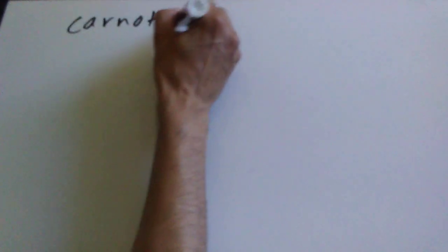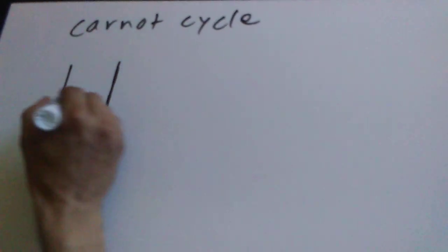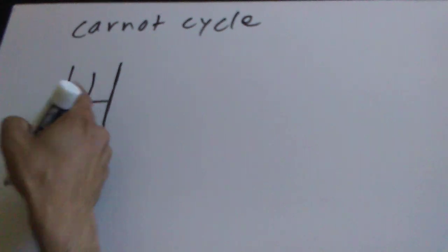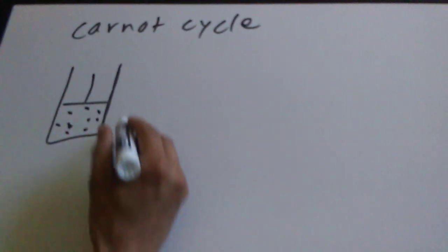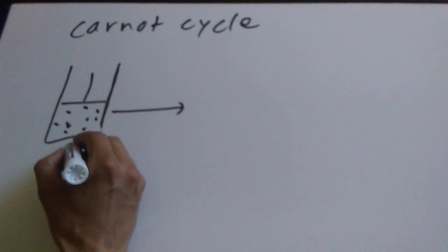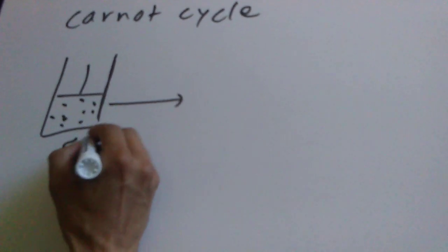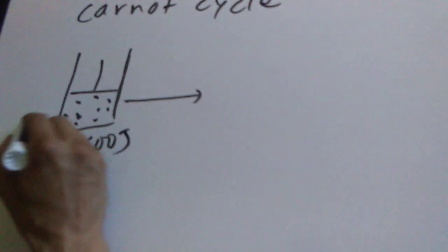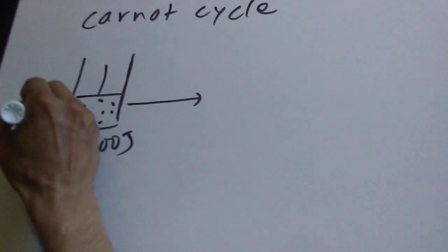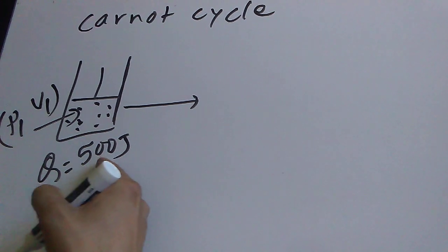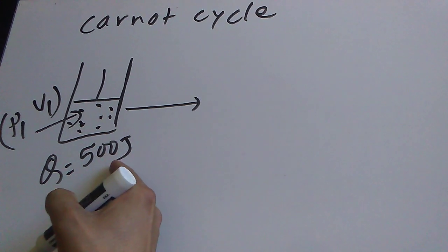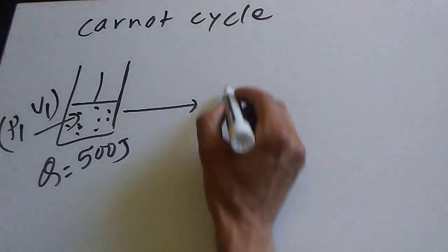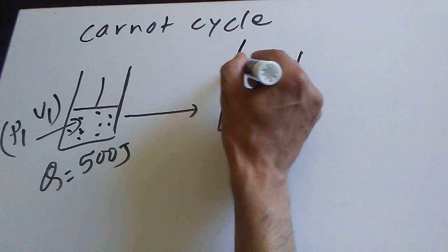We're going to talk about the Carnot cycle. Let's say we have a gas fitted with a frictionless and weightless piston. We heat it very slowly — isothermally and reversibly — supplying 500 joules of heat energy. At the beginning we have pressure P1 and volume V1, and after absorbing the 500 joules of heat energy very slowly, the pressure and volume become P2 and V2.